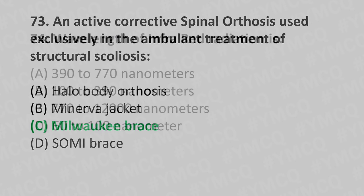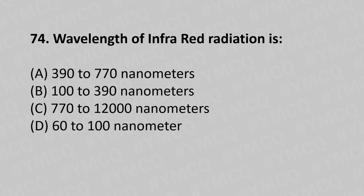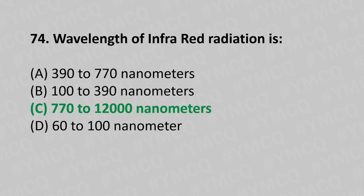Moving to our 74th question. Wavelength of the infrared radiation is: Option A, 390 to 770 nanometres; Option B, 100 to 390 nanometres; Option C, 770 to 12,000 nanometres; Option D, 60 to 100 nanometres. And the answer is Option C, 770 to 12,000 nanometres.